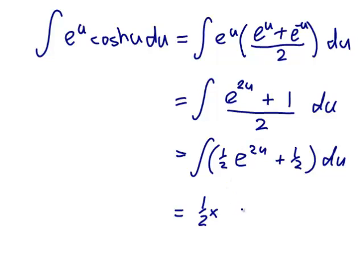e to the u would go up to e to the u, but it's not u, it's 2u, so I'll have to divide by that 2.